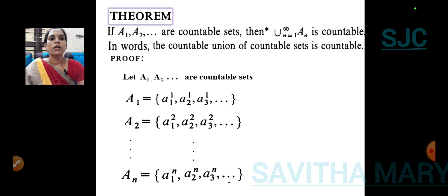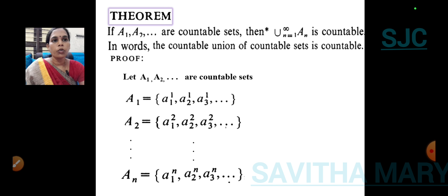See the theorem here: the countable union of countable sets is countable. So, suppose A1, A2, A3, etc. are some countable sets. We wish to prove that the union of these sets is countable.